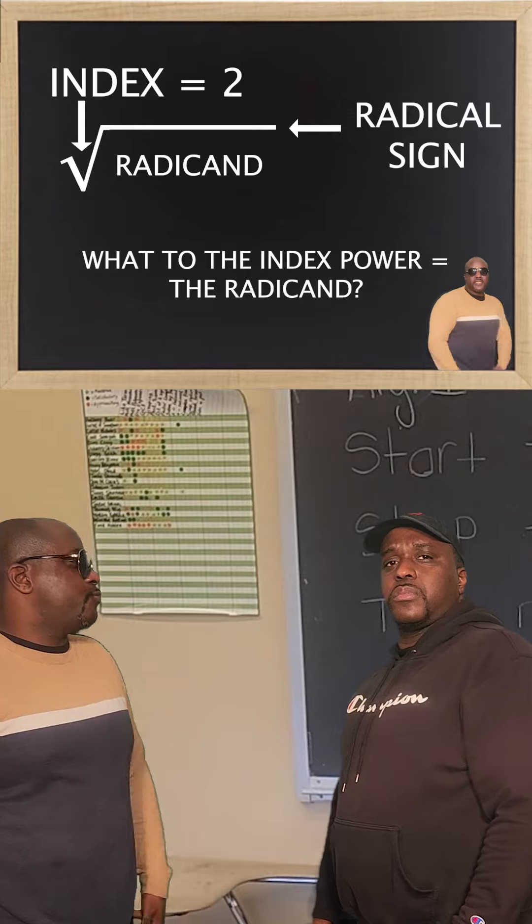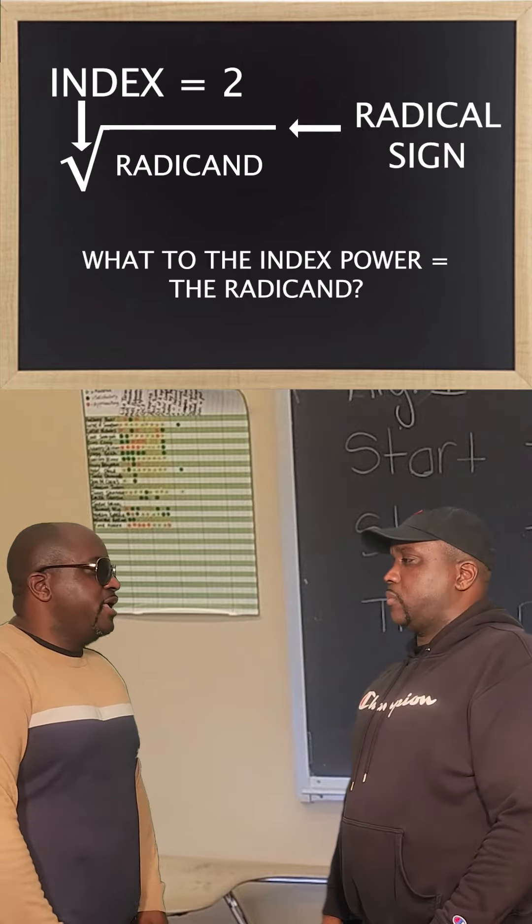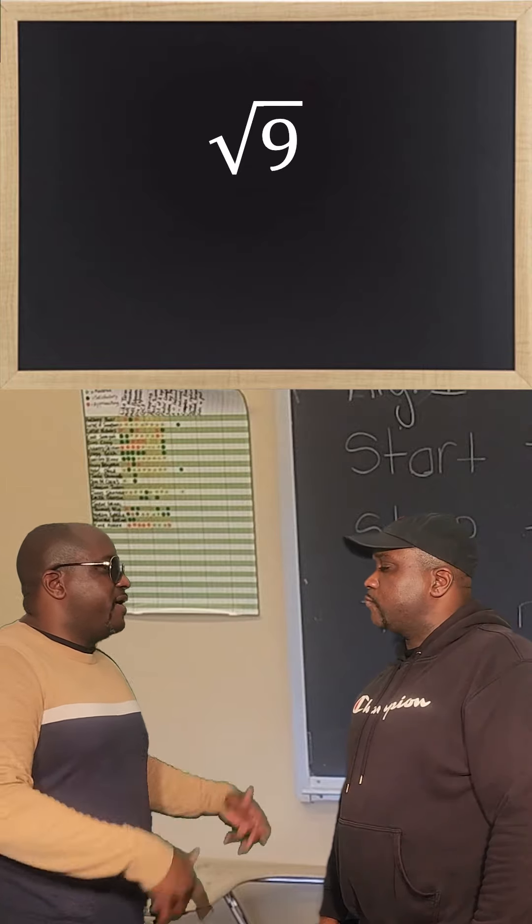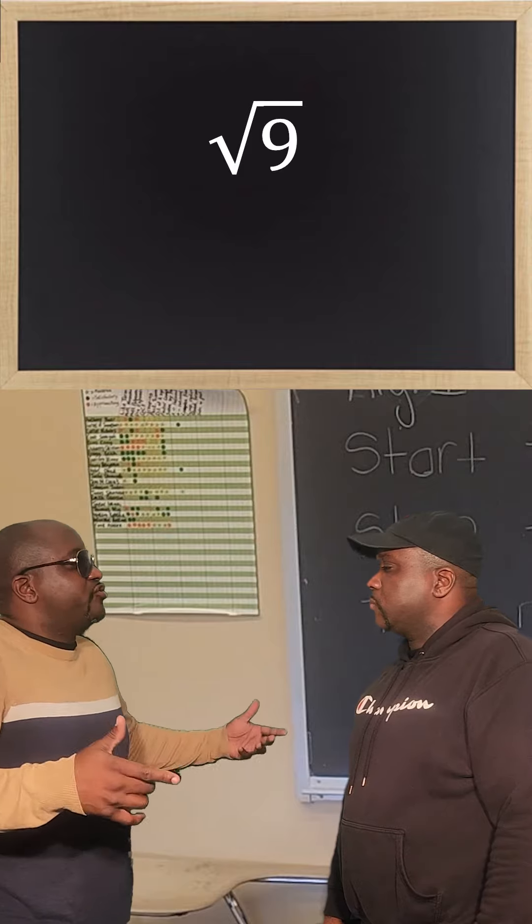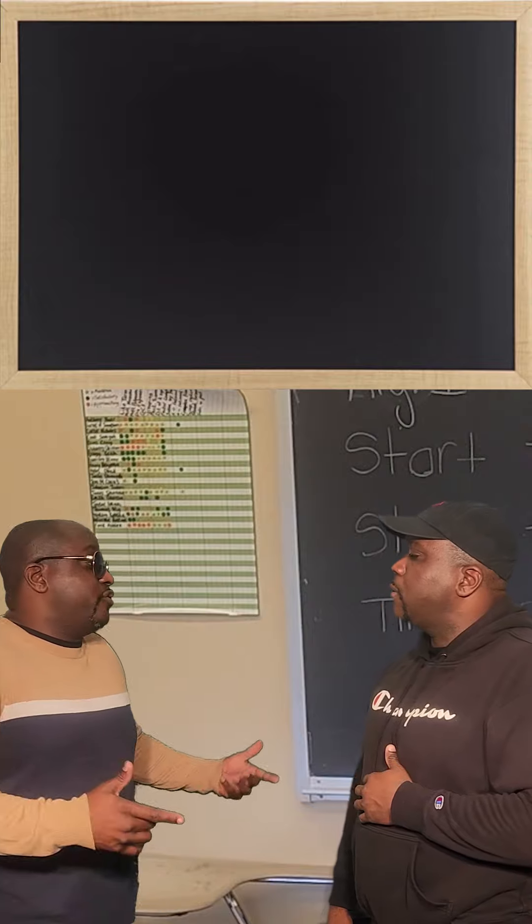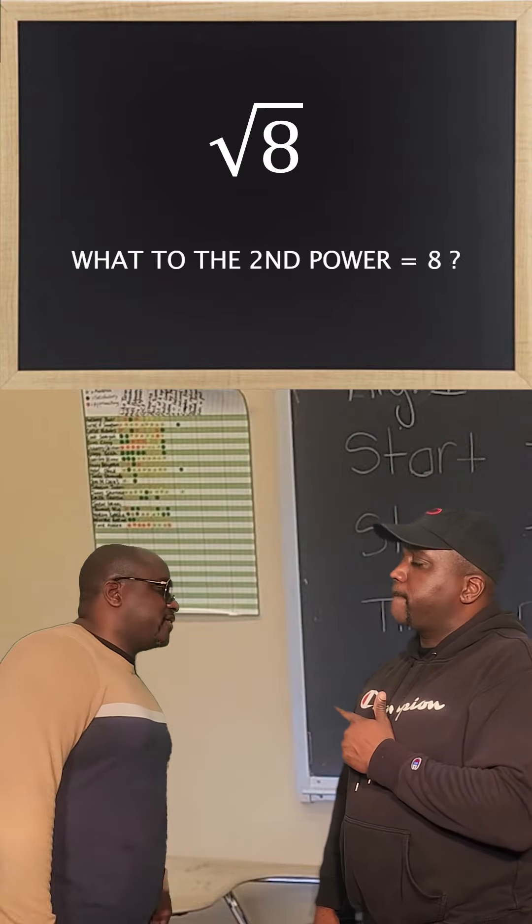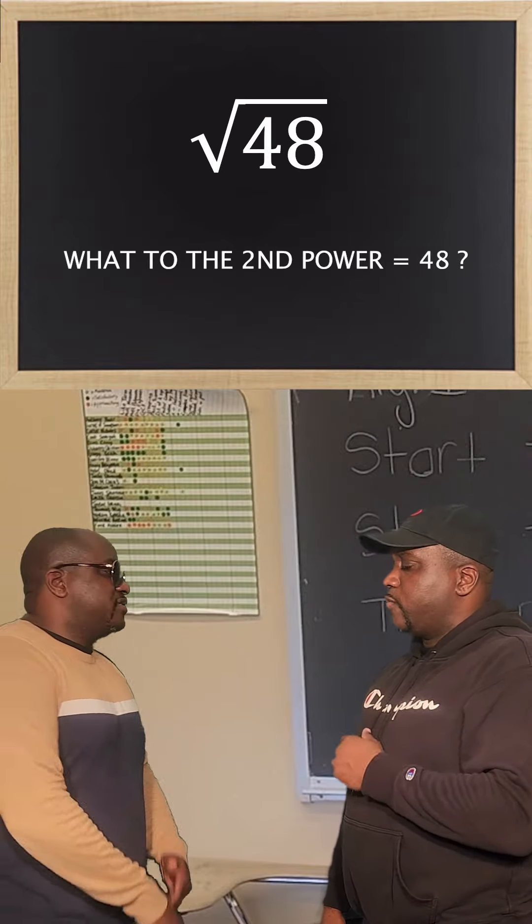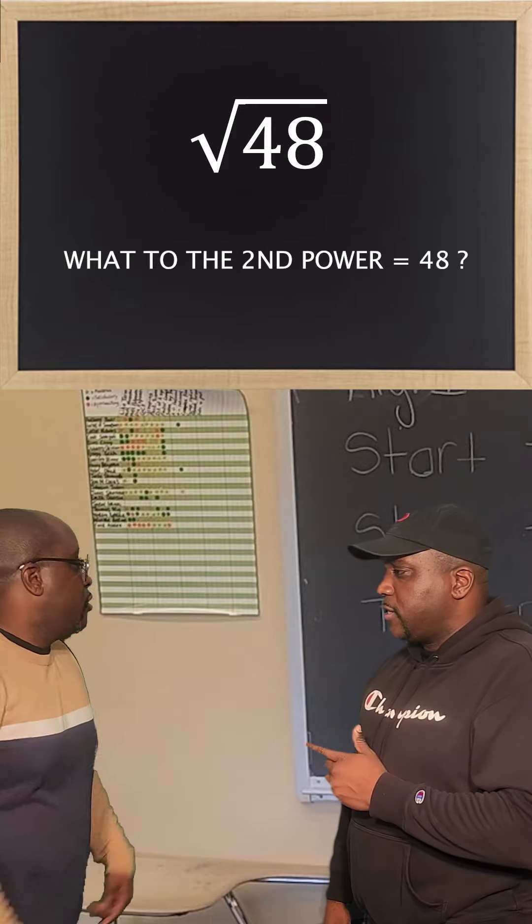What to the index power equals the radicand. What to the index power equals the radicand. Index is two and there's no number in the pocket. Nine is the radicand, let me show you how we drop it. What to the second power equals nine. Few more examples before we out of time. What to the second power equals eight. What to the second power equals forty-eight. What to the third power equals sixty-four.